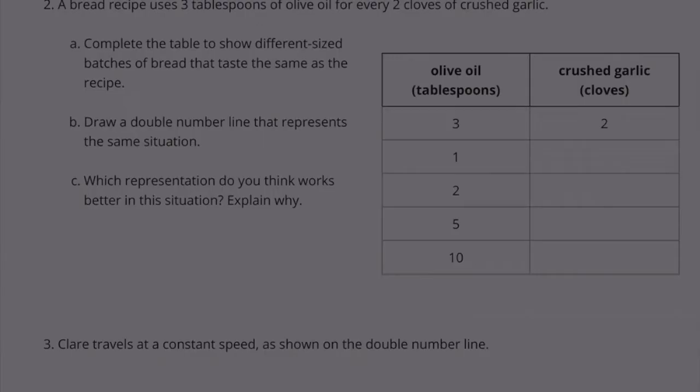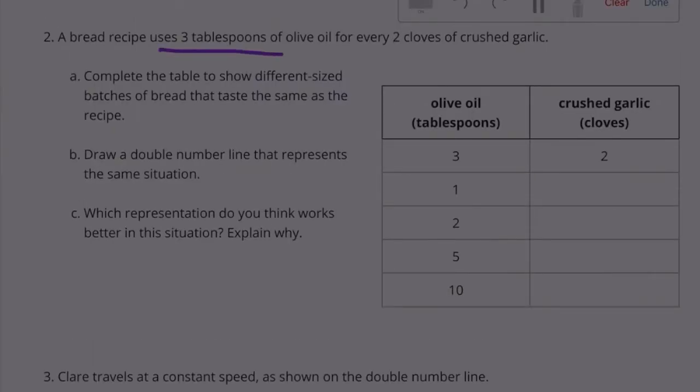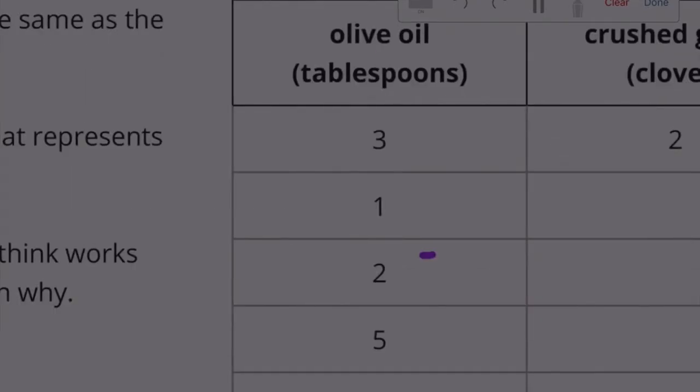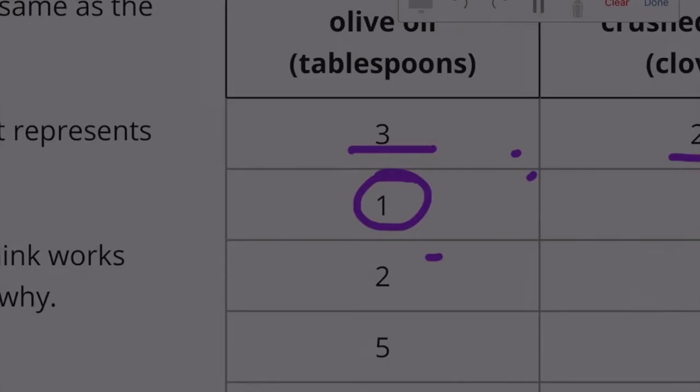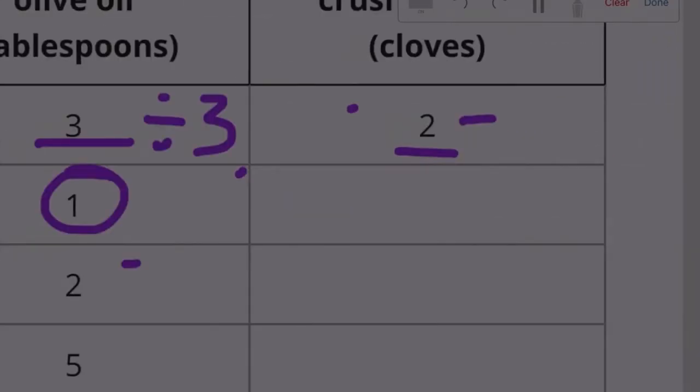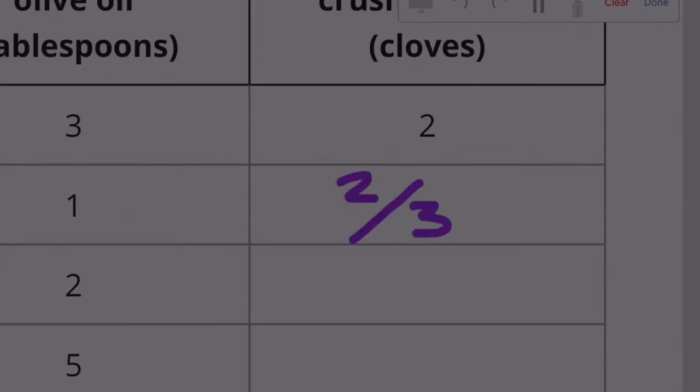Number two: A bread recipe uses three tablespoons of olive oil for every two cloves of crushed garlic. Complete the table to show different sized batches of bread that taste the same as the recipe. We need to keep the ratio of three tablespoons of olive oil to two cloves of crushed garlic. Here's the original 3 to 2, and when they made the 3 into a 1, three divided by three brings you to one, so two divided by three is two thirds. It would be 1 to two thirds.